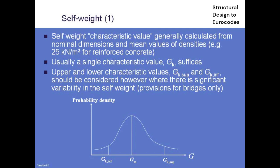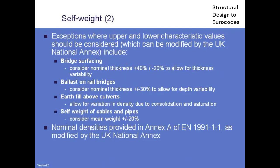However, there are some exceptions. Where a loading has very marked variability — like surfacing, where you have little control over it over a whole lifetime (it may be planed off giving less, or overlaid giving more) — Eurocode defines loads where you have to consider a lower bound and an upper bound value. This covers bridge surfacing, ballast on rail bridges, earth-fill on culverts, and self-weight of cables and pipes. For bridge surfacing, you must consider 40% more than the drawing value and 20% less. The load factor is then no different from the standard dead load factor.